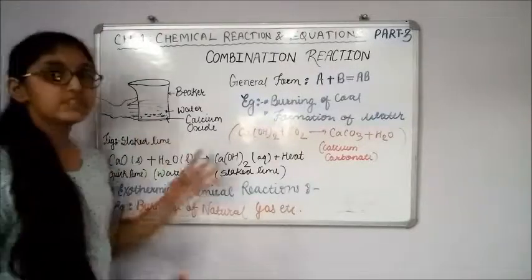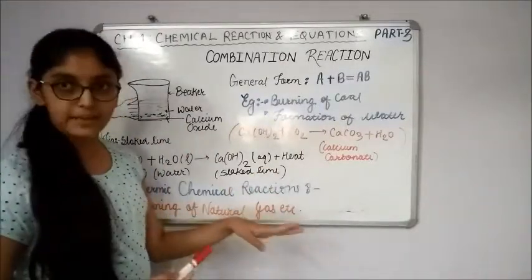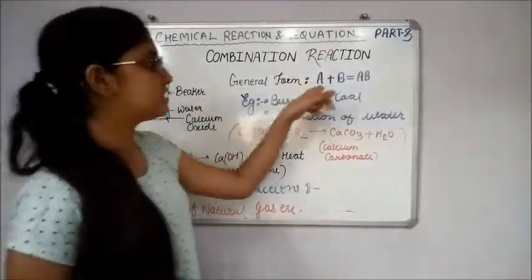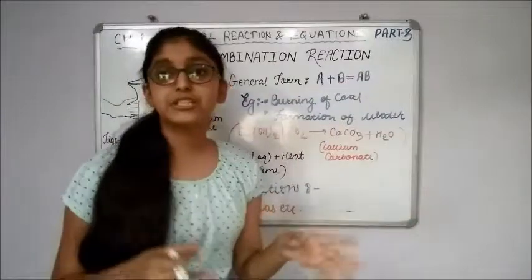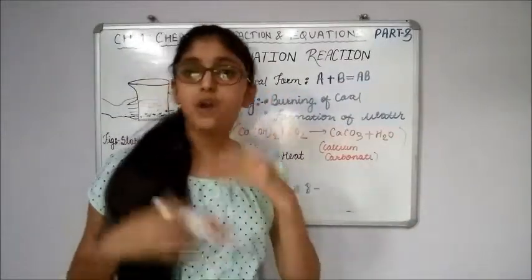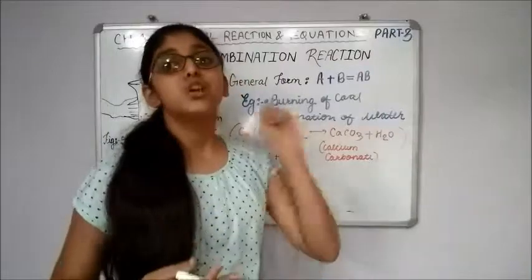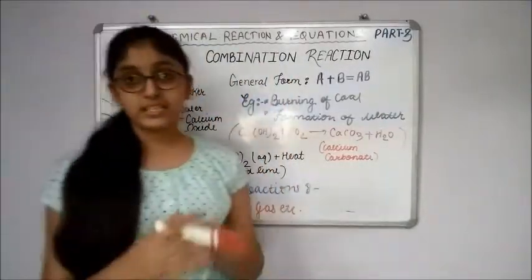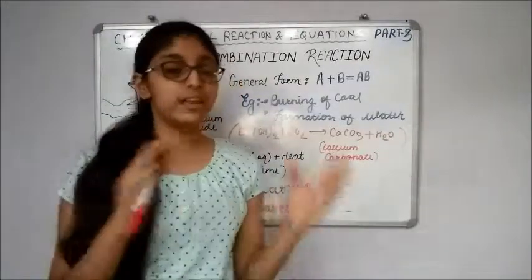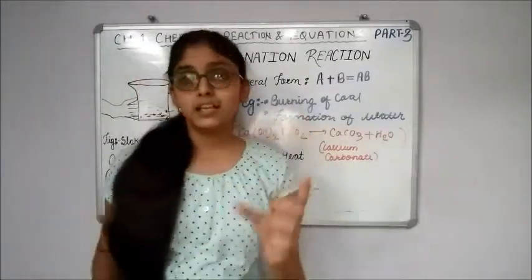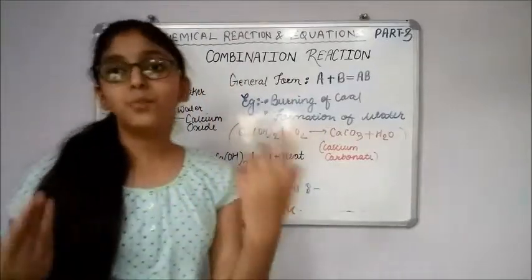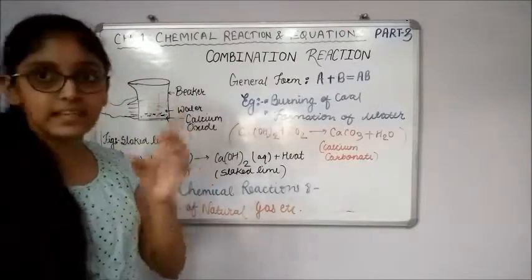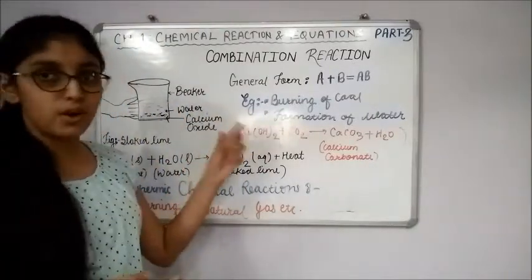Now the general form for any combination reaction is A + B equals AB. Why? Because any two or more substances react to form only one substance when it is a combination reaction. We can define combination reaction as a reaction in which two or more elements react to form a single substance.